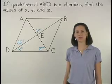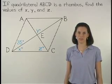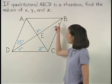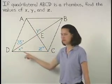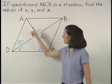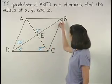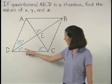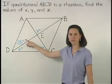Since the diagonals of a rhombus bisect the angles, diagonal DB must bisect angle ADC. So angle ADB must be congruent to angle BDC, which means that X must equal 35.